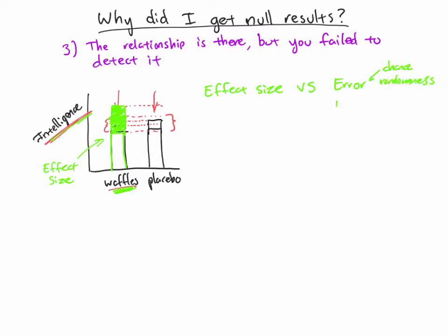So that is why we might be getting null results — because of this competition between effect size versus error, or chance, or randomness. Sometimes you'll see this called noise, and instead of effect, it's called the signal. This can be thought of as signal versus noise, and there's actually a very good book called 'The Signal and the Noise' all about this kind of issue. Hopefully that makes some intuitive sense, because this is not some far-out statistical concept — we don't have to talk about statistics at all to understand effect size.